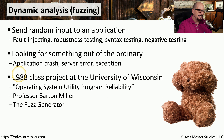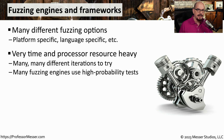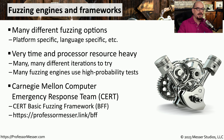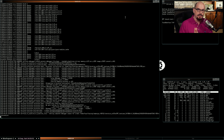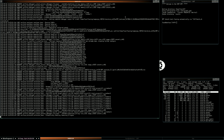One of the first fuzzers was created in 1988 as a class project at the University of Wisconsin — the Operating System Utility Program Reliability class — where Professor Barton Miller and his class created the fuzz generator. Since then, a number of different fuzzing engines have been created for different operating systems, code bases, and programming languages. This is almost always an automated process, since there may be hundreds or thousands of iterations putting input into the application. If you want to try a fuzzing engine yourself, you can download the Basic Fuzzing Framework (BFF) from CERT — the Carnegie Mellon Computer Emergency Response Team — at professormesser.link/BFF. Here's a sample of the CERT BFF running, going through iterations of putting random information into the app and waiting to see what the application does with that data.